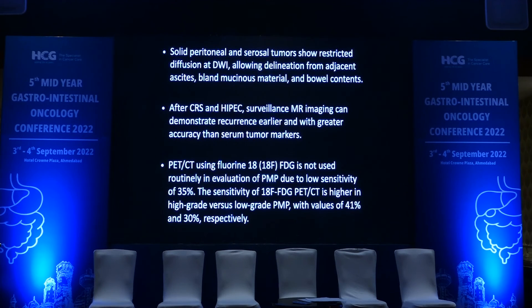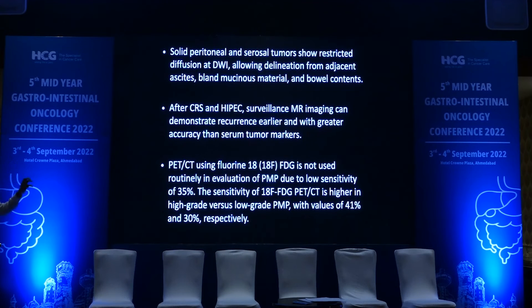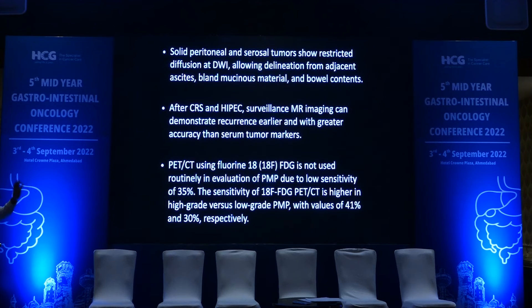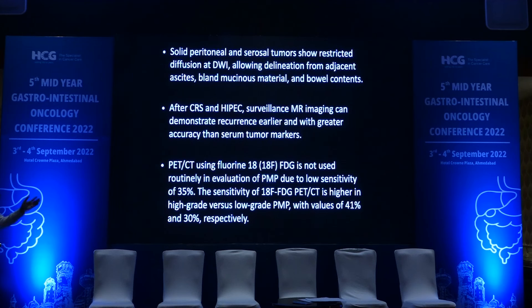Solid peritoneal and serosal tumors show restricted diffusion, whereas cystic lesions do not show such restriction. Mucinous lesions do not show any enhancement except peripheral enhancement. CRS and HIPEC surveillance on MRI is very good. PET-CT is generally not used routinely; FDG PET-CT sensitivity is higher in high-grade versus low-grade PMP, with values of around 40-41% and 30% respectively.